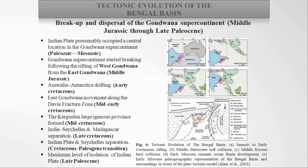During Paleozoic to Mesozoic time, the Indian plate presumably occupied a central location in the Gondwana supercontinent. During the middle Jurassic, Gondwana started to rift apart into West Gondwana and East Gondwana. West Gondwana consisted of South America and Africa, and East Gondwana consisted of India, Seychelles, Madagascar, Australia, and Antarctica. Throughout the Early Cretaceous to Late Paleocene, the Indian plate reached its maximum level of isolation from the parts it was joined to before the breakup.